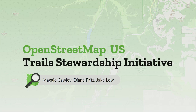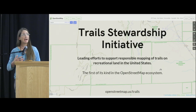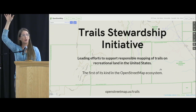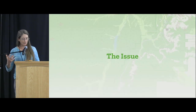In the last panel you heard references to the trail stewardship initiative. Our group presentation is going to talk about what that is and what we've been working on. The OpenStreetMap US organization came up with this program — the Trail Stewardship Initiative — out of the trails working group, which formed from a very interesting request. I want to introduce people to that background and talk a little bit about what our data is and what the issue is that inspired this initiative.